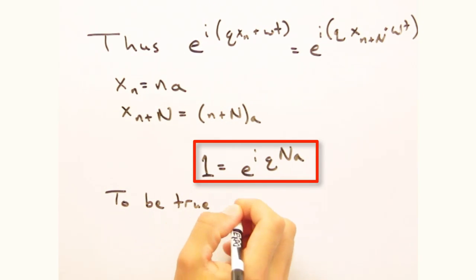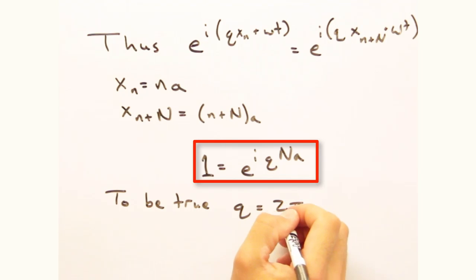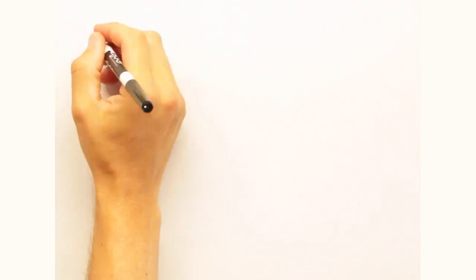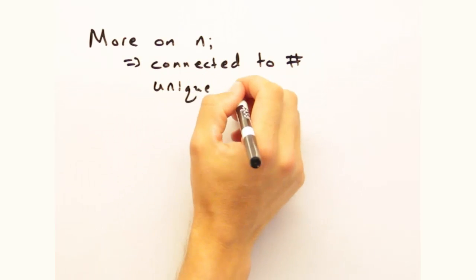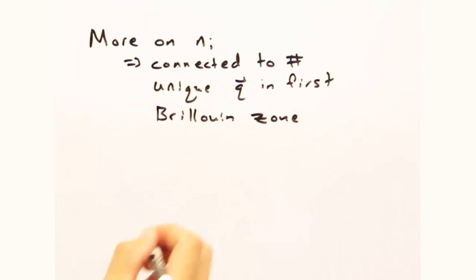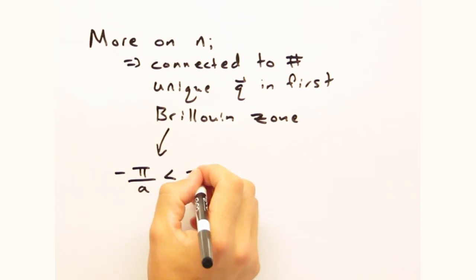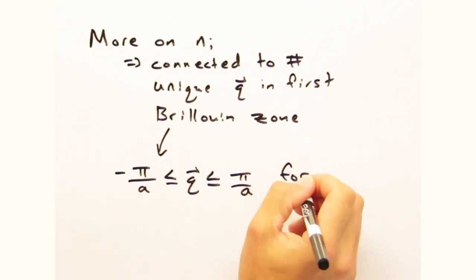And by inspection, our Q vectors must be equal to 2 pi over capital N times A, all of that times an integer we denote as n sub i. This integer n_i is fairly important because it denotes how many modes we have in the crystal. We also see that our Q vectors are related to our reciprocal lattice vectors times our pre-factor. And since we know Q is bounded by minus pi over A to pi over A for unique solutions, how will n_i be bounded?